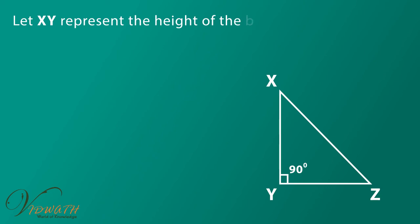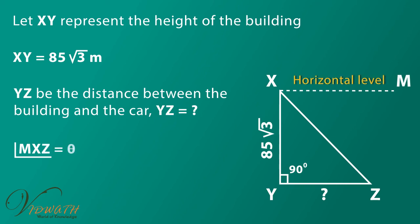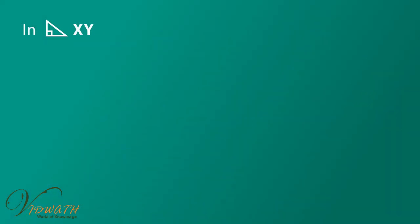Solution: Read the problem carefully. Convert the data into meaningful diagram. Let XY represent the height of the building. XY is equal to 85 square root of 3 meter. YZ be the distance between the building and the car. YZ is equal to question mark. Angle MXZ is equal to theta is equal to 60 degree is angle of depression. Since XM parallel to YZ, so angle MXZ is equal to angle XZY because they are alternative angles. In triangle XYZ, angle XYZ is equal to 90 degree.